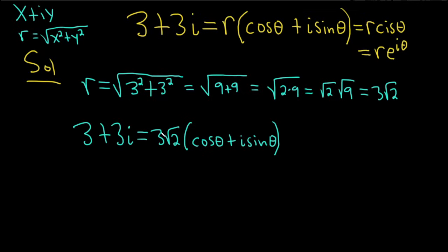And let's get rid of this r by dividing both sides by it. So if we divide both sides by 3 root 2, we should divide each term by 3 root 2. So it'll be 1 over the square root of 2 plus 1 over the square root of 2 times i. The 3's cancel. Equals cosine theta plus i sine theta.